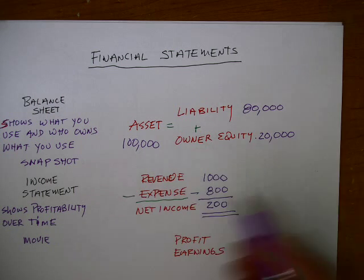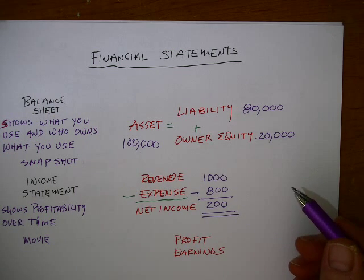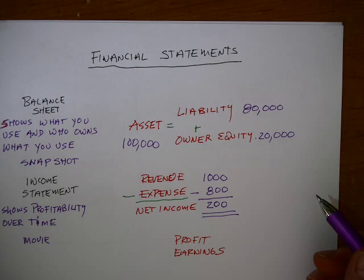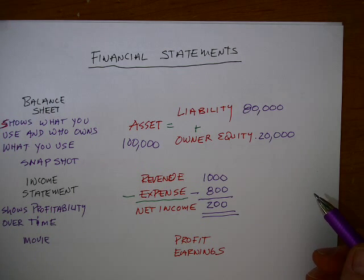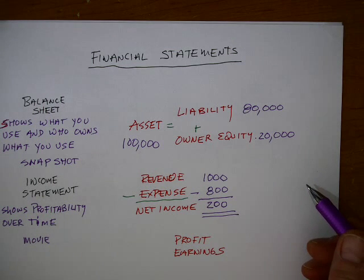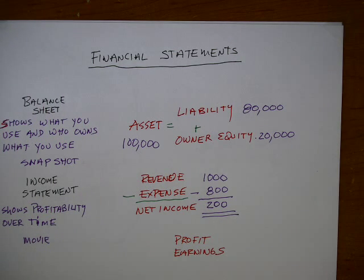So these are the two financial statements: the income statement and the balance sheet. The income statement shows profitability over time — it's like a movie. The balance sheet shows what you use and who owns what you use — it's like a snapshot. Thank you very much for listening.